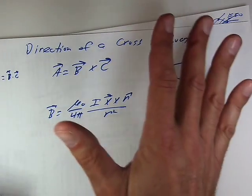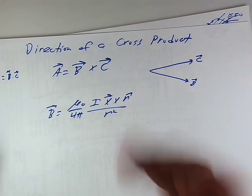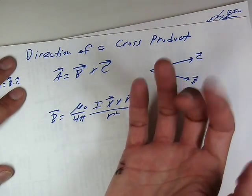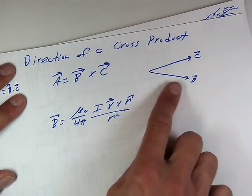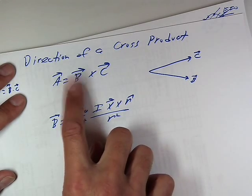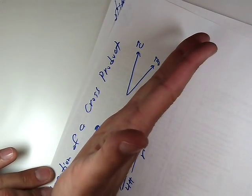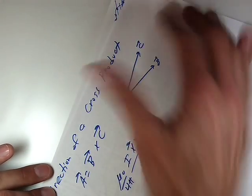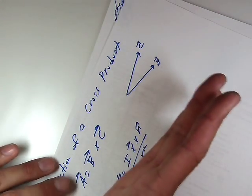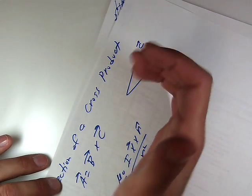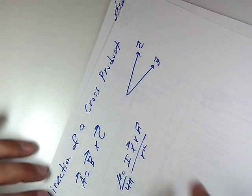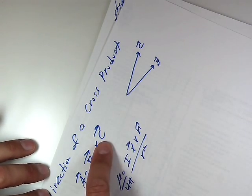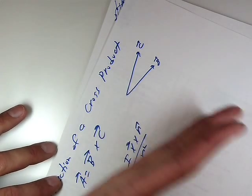It's the same right-hand rule, but it's a bit different in application. It's going to work like this. I'm going to take my fingertips, and I'm going to put them in the direction of always the first vector. In this case, it's B. So I put my fingertips in the direction of B like this. No matter where it is, or no matter how I have to twist my hand, I always put my fingertips in the direction of B. And then what I'm going to do is I'm going to curl my fingertips in the direction of the other vector, which in this case is C.